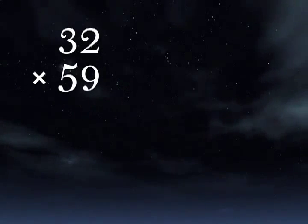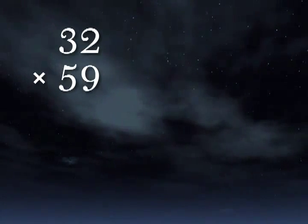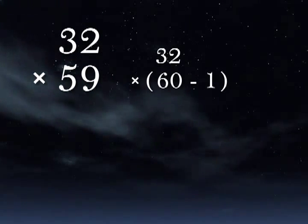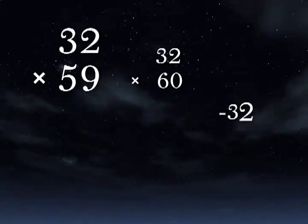Take a look at this problem. You're being asked for 59 groups of 32. Instead, let's call it 60 groups of 32 and then subtract 1 group of 32. Your problem is now 32 times 60 minus 32.